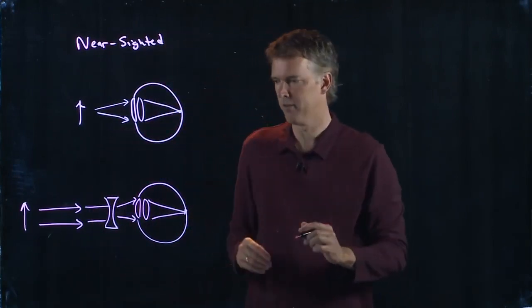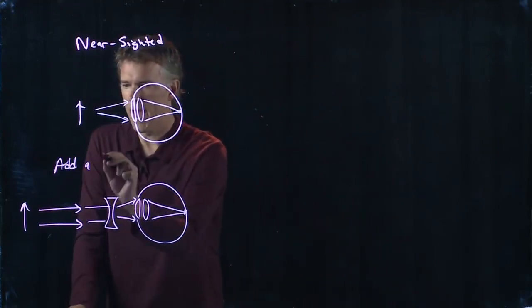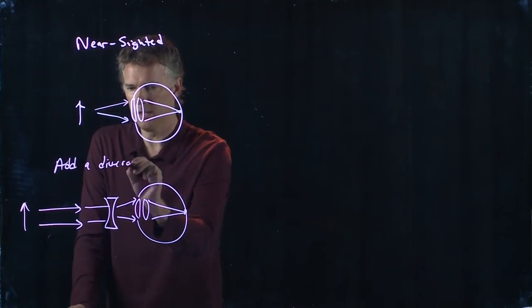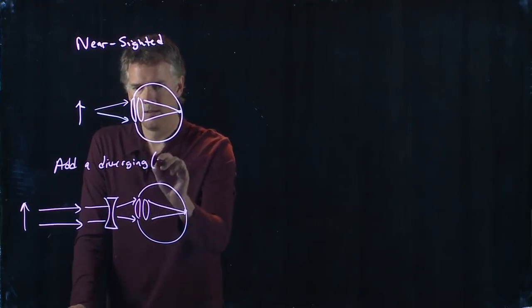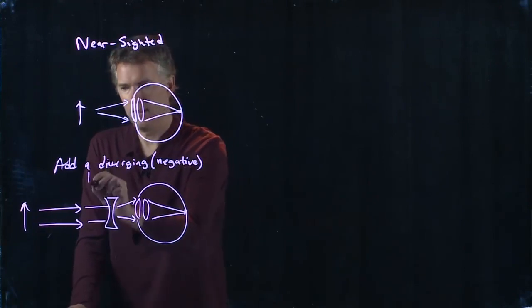At the retina, it'll be in focus. So for nearsighted, you add a diverging or negative lens.